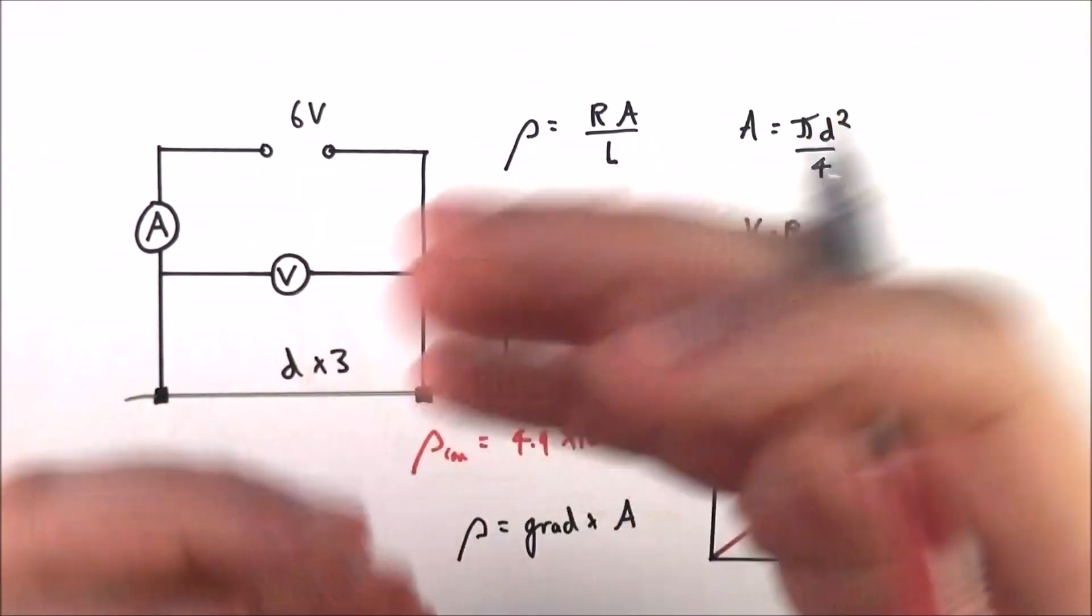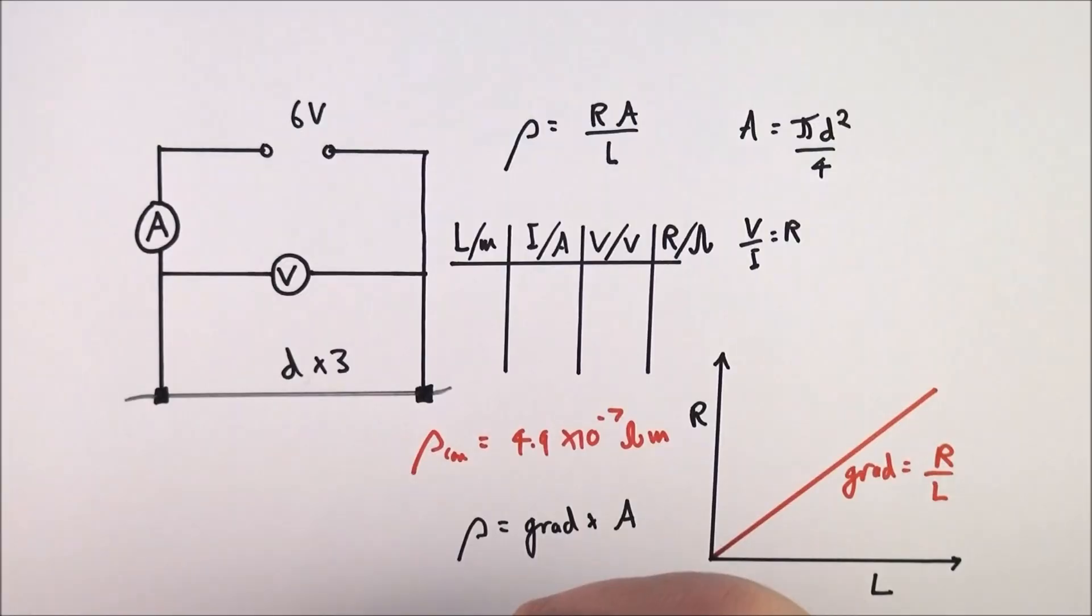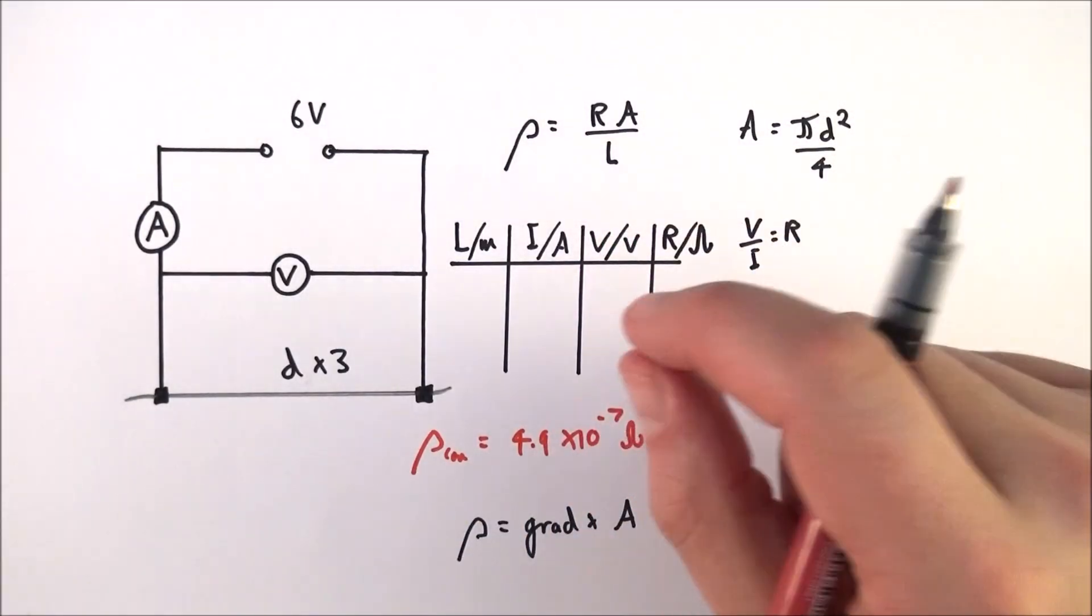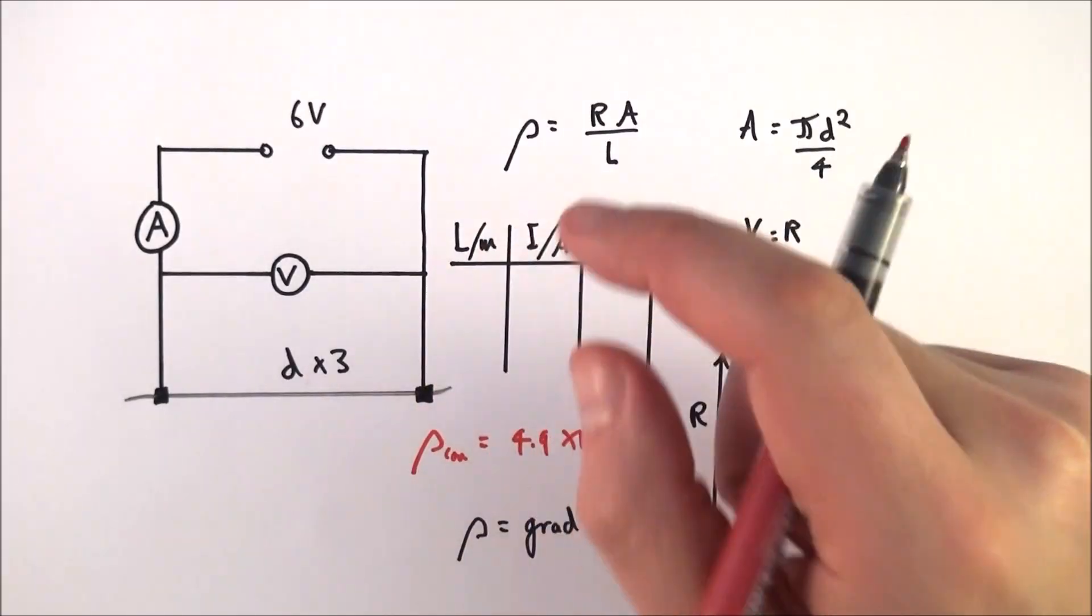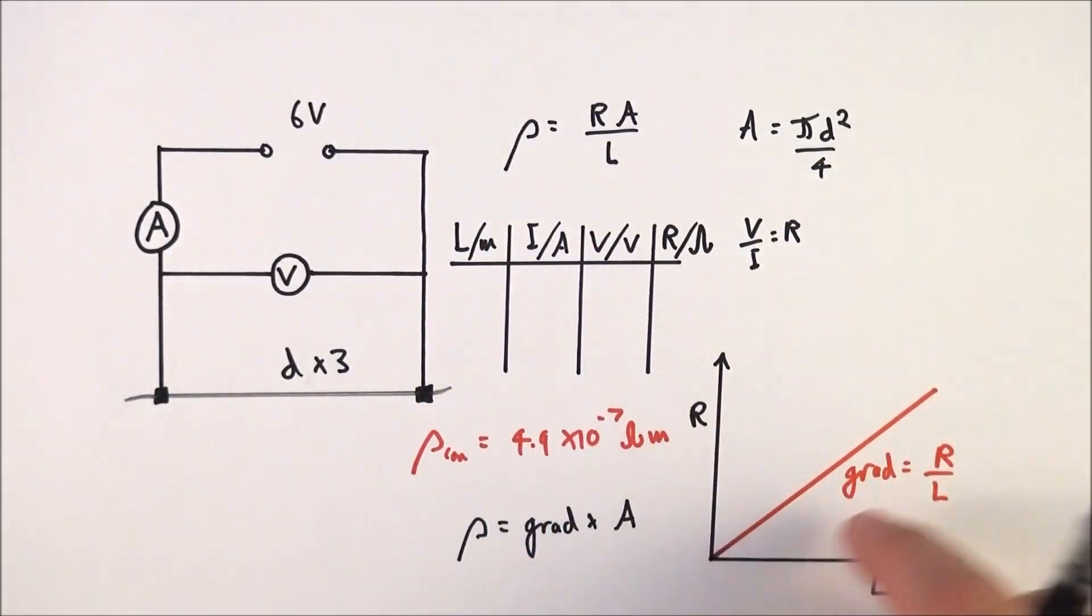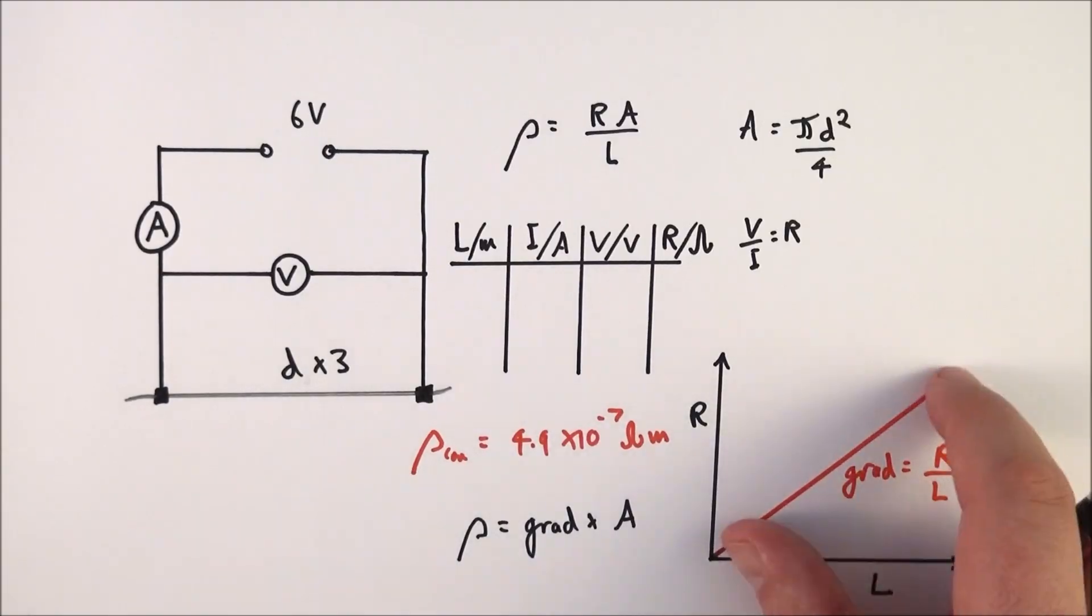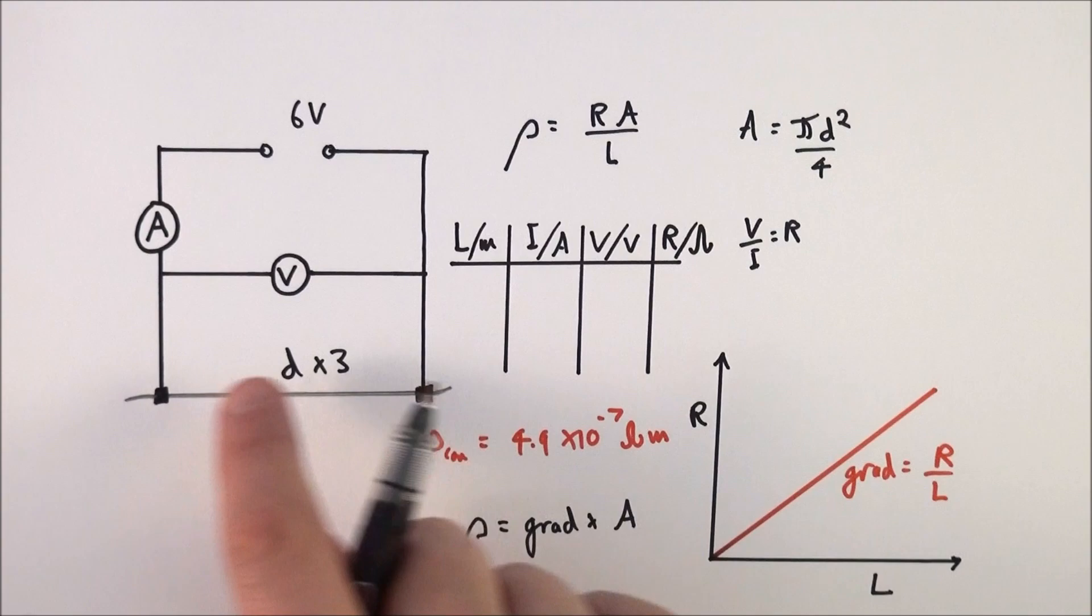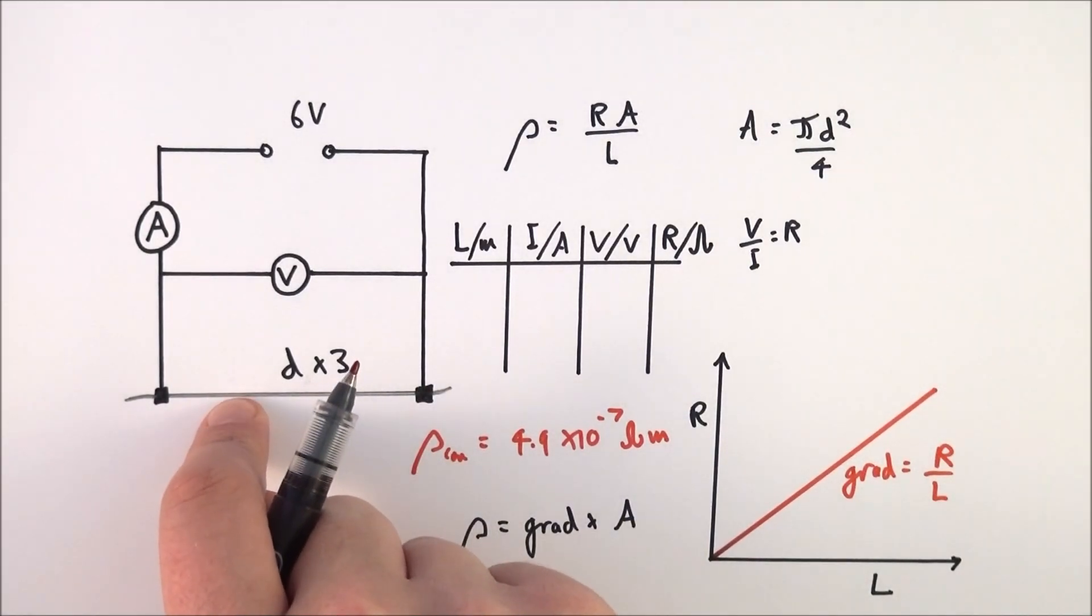Hopefully that makes sense. A quite nice straightforward practical. Get your six results, take some repeat readings, use that to plot a good graph on a good sized piece of paper, work out the gradient, and then use that gradient and the area to work out the resistivity of this constantin wire.